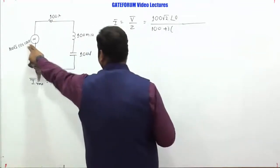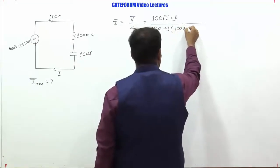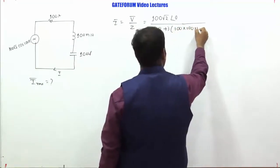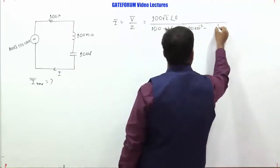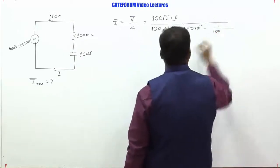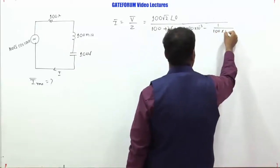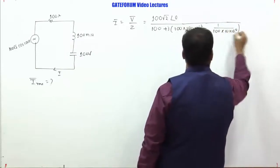What is omega? Omega is the operating frequency. So this is coming 100. Omega L is 100 into 10 power minus 3. Minus of 1 by omega C. What is omega? Omega is the operating frequency again, 100. What is C? C is 10 into 10 power minus 6, because this is in micro.